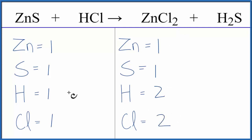It looks like all we need to do is double our hydrogens and double our chlorines, and that's convenient because they're together. So we could just put a coefficient of two in front of the HCl.